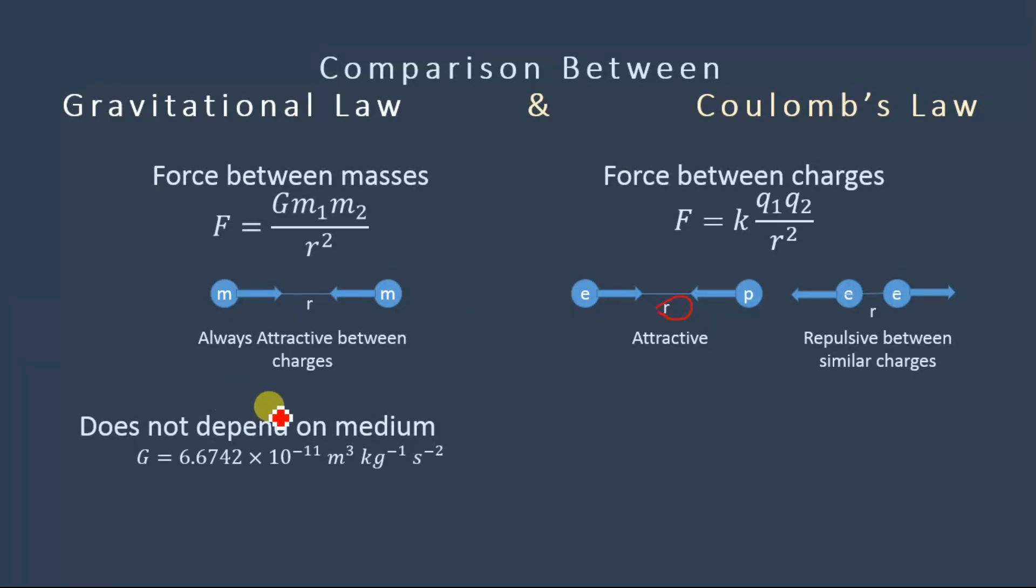The third difference between the gravitational law and the Coulomb's law is that the gravitational law does not depend on the medium. This capital G, which is also known as universal gravitational constant, is equal to 6.6742 × 10^-11. This value is fixed.